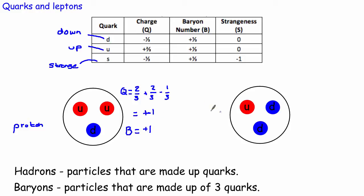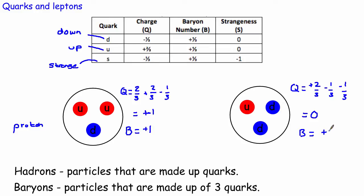Another particle looks exactly the same as the proton except one up quark has been swapped with a down quark, giving us up, down, down. From a charge point of view: plus two thirds from the up quark, minus one third from each of the two down quarks — that's plus two thirds minus one third minus one third — giving a charge of zero. The baryon number is again one third plus one third plus one third equals plus one. So this is a baryon with a charge of zero — this is the neutron.